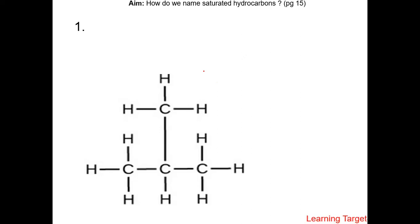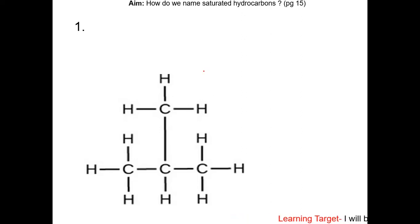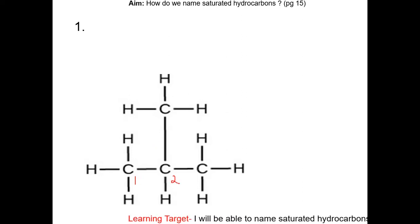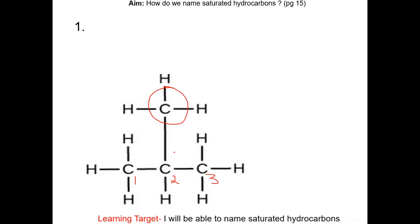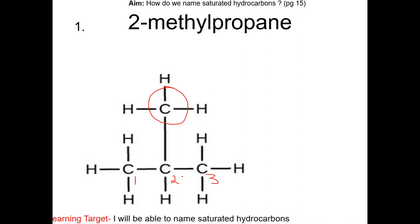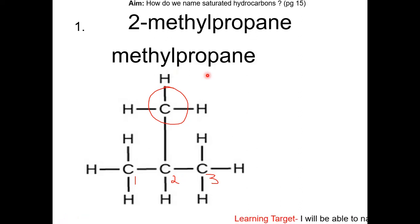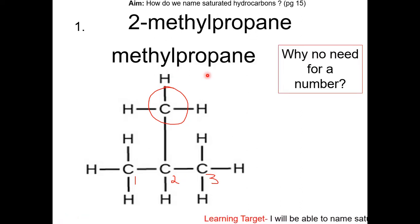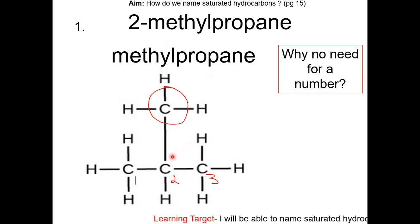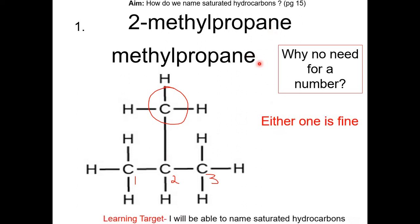On page 17, we're going to look at more examples and figure out the chemical name of each of these hydrocarbons. For question 1, this compound has a parent chain of 3 carbons. The methyl group is on carbon 2. Therefore, the name of this compound is 2-methylpropane. This compound can also be written as methylpropane because the methyl group can only be on carbon 2; if it's on any other carbon, it will be part of the parent chain.